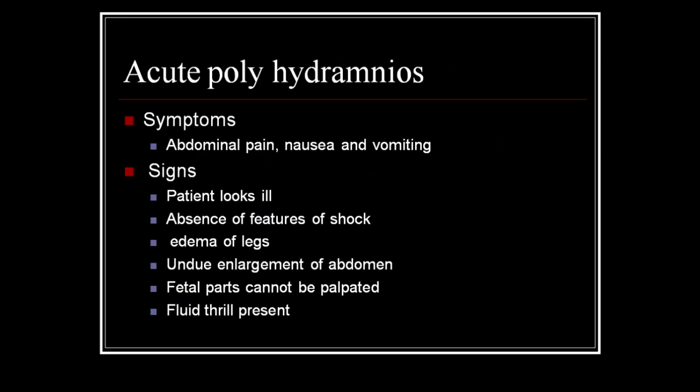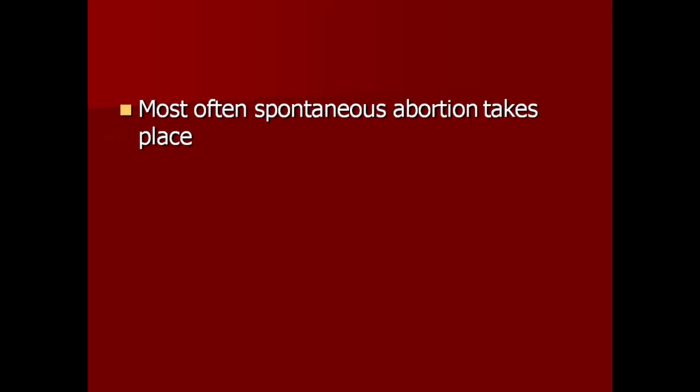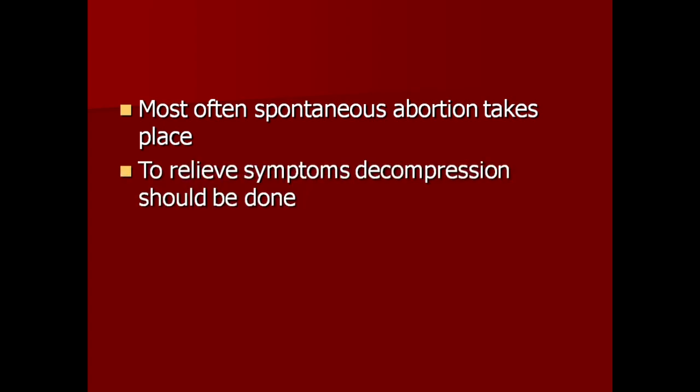Acute polyhydramnios: symptoms include abdominal pain, nausea, and vomiting. Signs include patient looking ill, absence of features of shock, edema of the legs, and undue enlargement of the abdomen. Fetal parts cannot be palpated; fluid thrill is present. Most often it will end in spontaneous abortion. To relieve symptoms, decompression should be done.